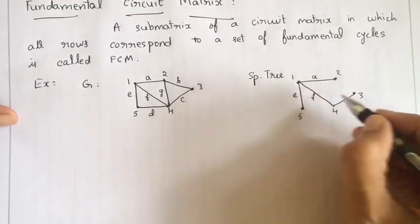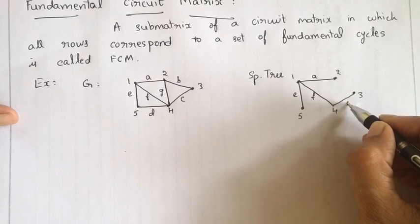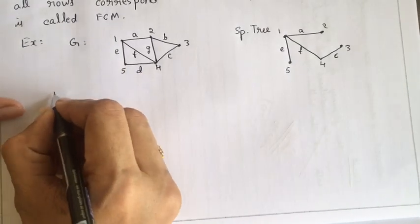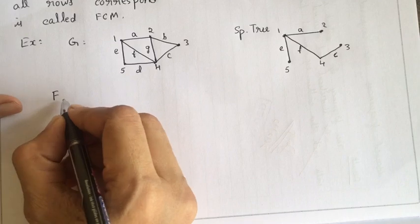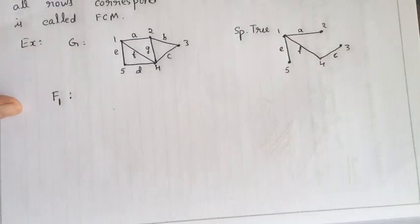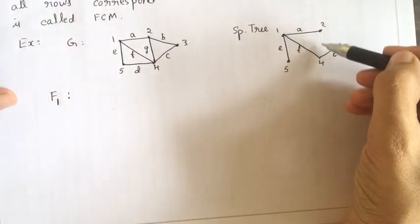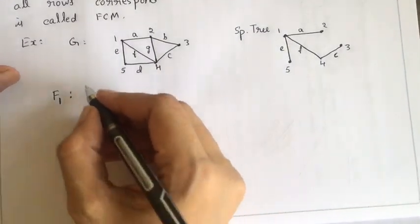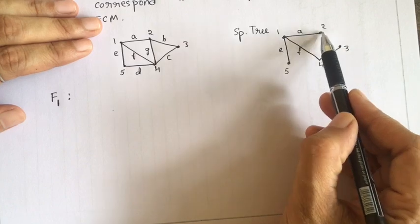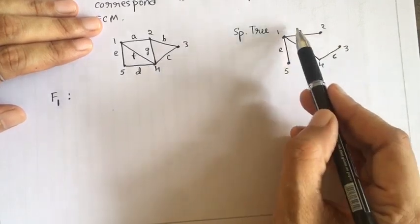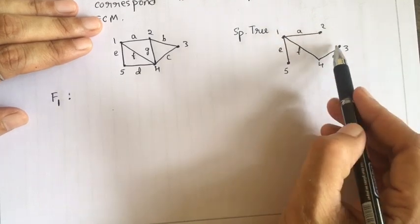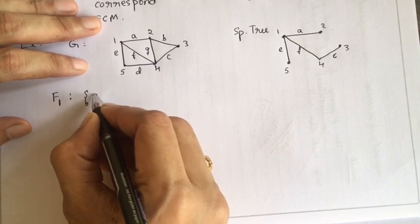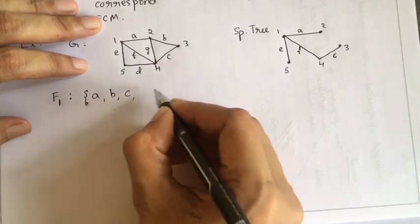This edge is F and this is edge C. With respect to this spanning tree, we can write the fundamental cycles or fundamental circuits. Adding a chord to the spanning tree produces a cycle — that cycle is the fundamental cycle. For instance, adding edge B gives the first fundamental cycle: A, B, C, and F.